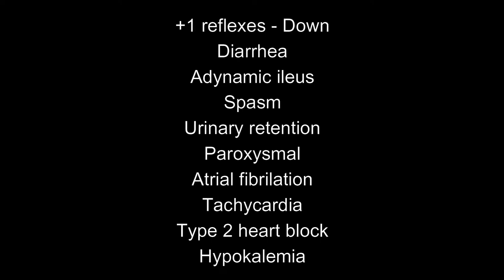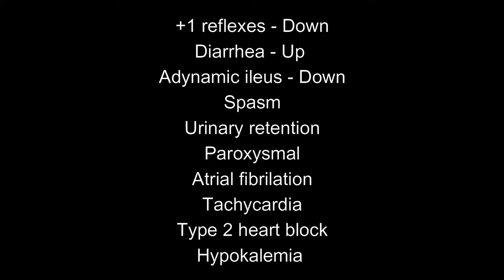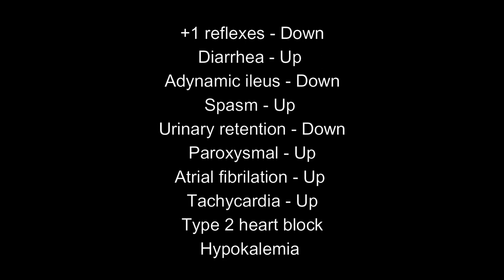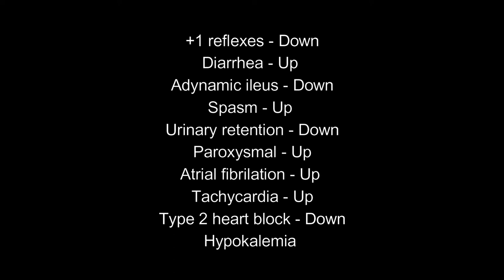Answers: plus-one reflexes — down, select for Kussmaul's. Diarrhea — up. Adynamic ileus (failure of passage of enteric contents due to paralysis of intestinal motility) — down, select for Kussmaul's. Spasm — up, no select. Urinary retention — down. Paroxysmal (sudden intensification of symptoms such as spasm or seizure) — up, no select. Atrial fibrillation — up, no select. Tachycardia — up. Type 2 heart block — down, select for Kussmaul's. Hypokalemia — up. Try to remember the most common mistake made by test takers with select-all-that-apply questions.